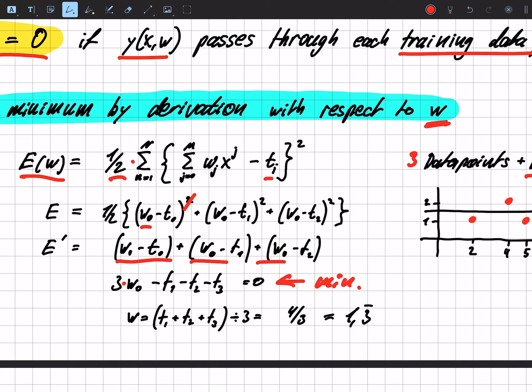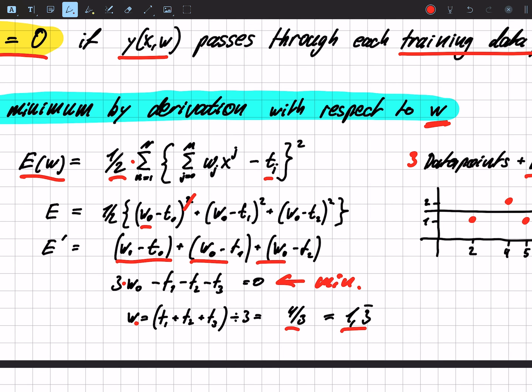Basic math, we get w0 is the same as t1 plus t2 plus t3 divided by three, and this is four thirds, so it's basically 1.3.